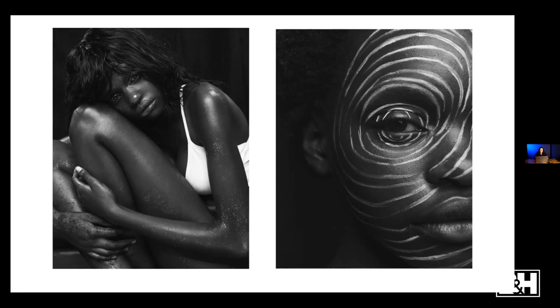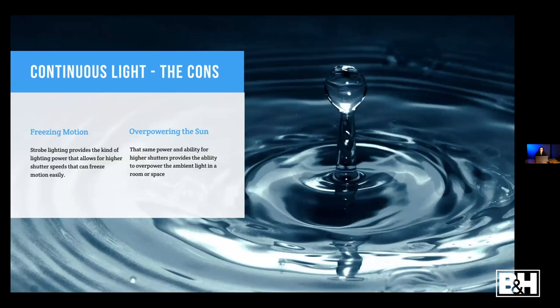I promised we'd talk about the cons of continuous light. Many photographers I know have both: strobe lights for when they want to freeze motion or overpower the sun, and continuous lights for when they want to do something like Hunter does — beautiful setup, powerful LED lights that don't overheat, capturing images they can then expand into video, all with the same setup without having to break everything down and reset.